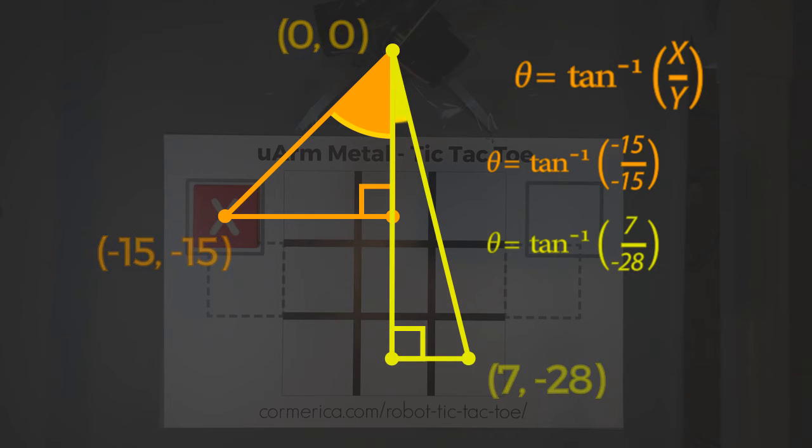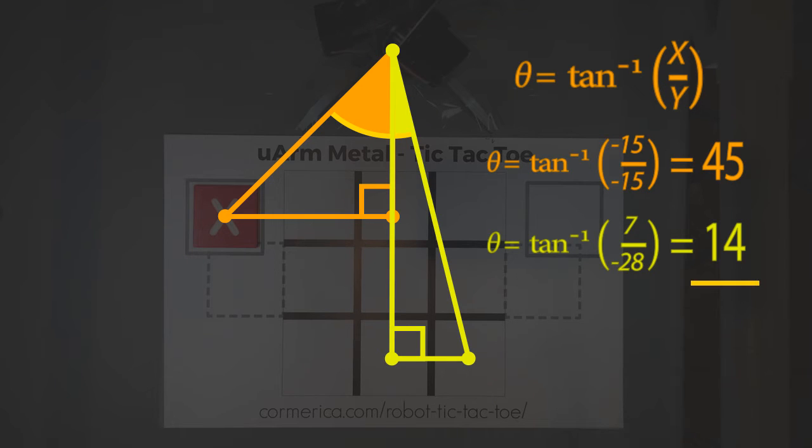By solving for each half of the move, I can simply add those two angles together to determine the full hand rotation needed to keep the marker from turning.